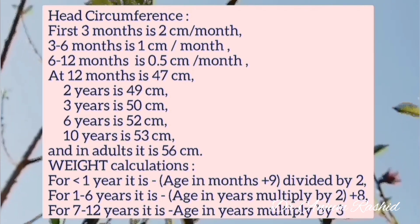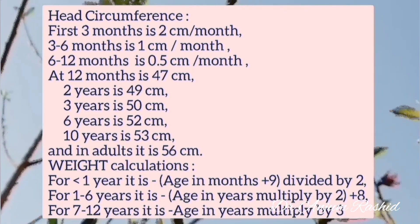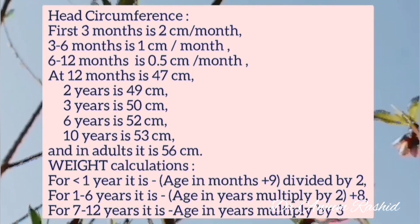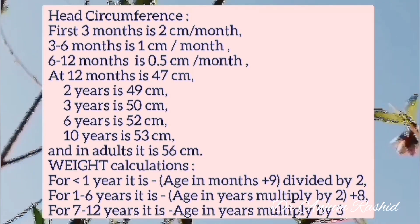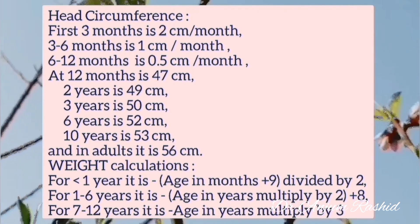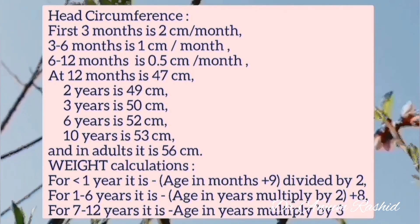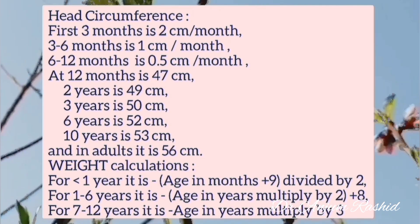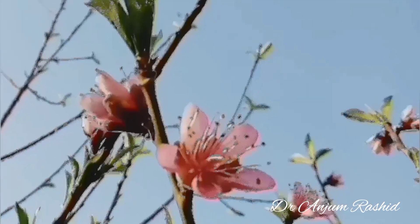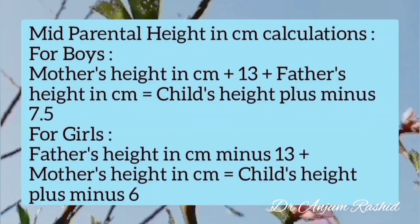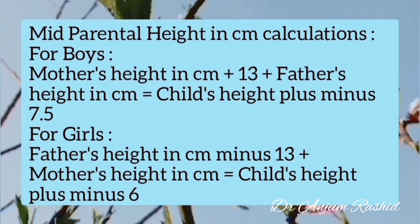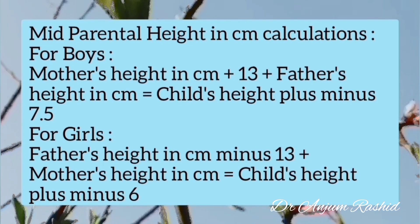In adults, head circumference is 56 cm. Weight calculations: for less than one year, it is (age in months + 9) ÷ 2; for one to six years, it is (age in years × 2) + 8; and for seven to twelve years, it is age in years × 3.